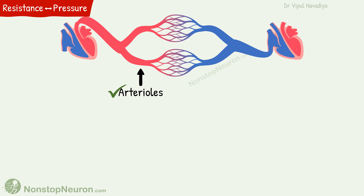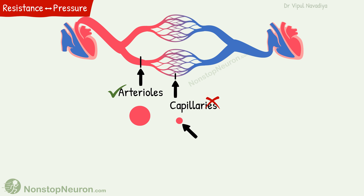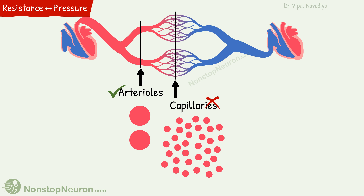Now it's time to answer the question from the beginning: why do arterioles have the greatest resistance and not capillaries? If you still think capillaries provide more resistance, you are not totally wrong. If you pick a single capillary and a single arteriole, the resistance would be more in the capillary because it has a smaller radius. But aggregate resistance at any level of branching depends not only on radius, but also on the total number of parallel vessels at that level. The more the parallel vessels, the smaller the aggregate resistance. Since capillaries far outnumber arterioles, the aggregate resistance at the capillary level is less than at the arterioles. Thus, arterioles provide the greatest resistance and are the site of the steepest pressure drop.